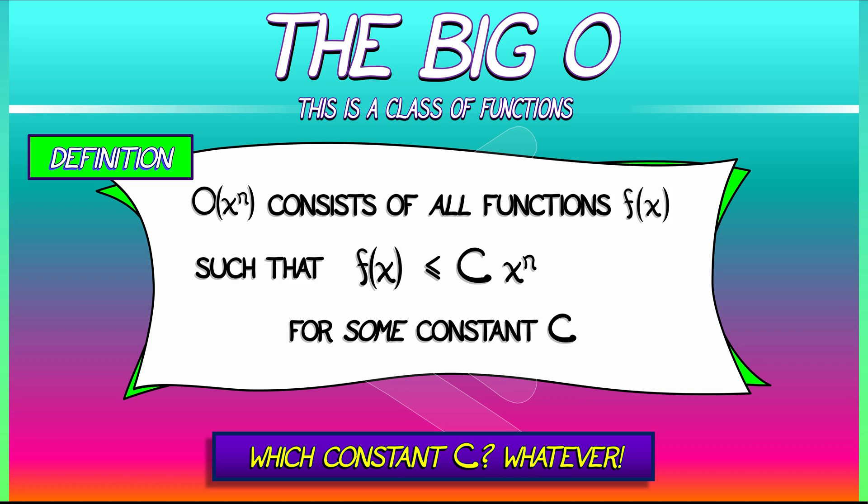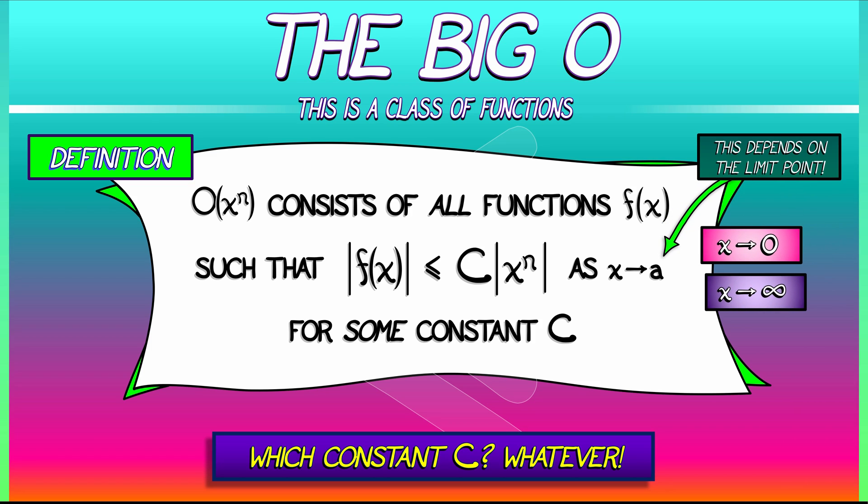Now, we do care about a few details. One detail we care about is because this is an inequality, a less than or equal sign, we better have everything in absolute values so that negatives don't mess stuff up. The other thing that we care about greatly is that we pay attention to the limit as x goes to a. So being in big O really depends on whether you're talking about, say, x going to zero or x going to infinity or x going to some other a. You've got to state that.